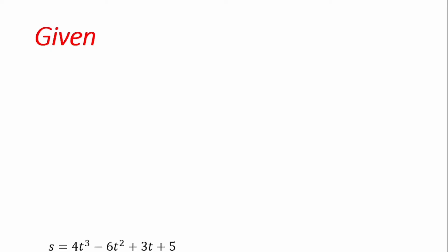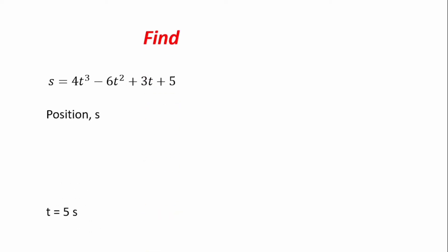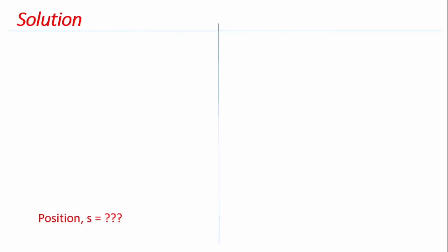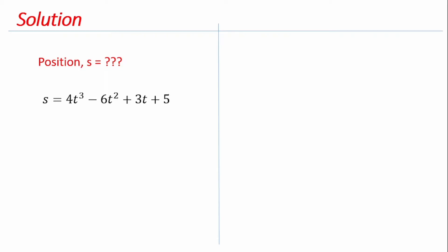We are given an equation for position at any point in time, and we're given t = 5 seconds. The first question asks for position, velocity, and acceleration. To find position, we simply substitute t = 5 into the position equation x = 4t³ − 6t² + 3t + 5, and we get the position to be 370 meters.